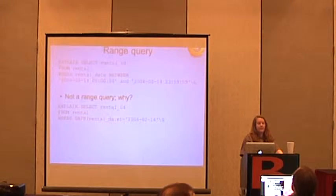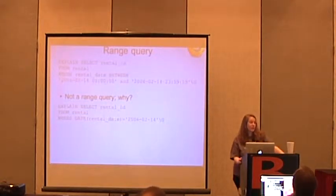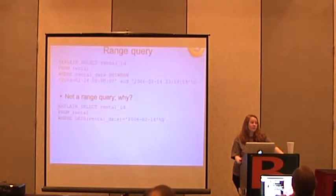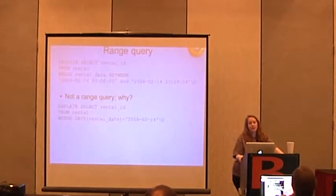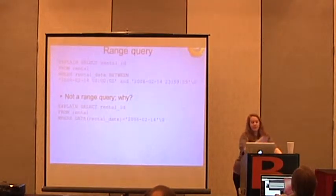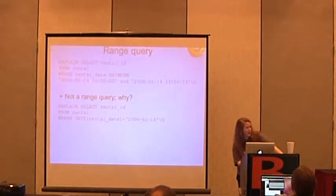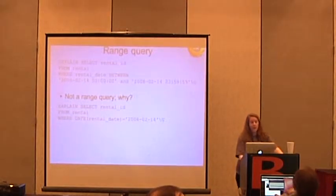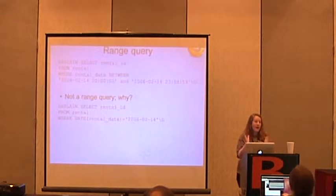MariaDB does have what are called virtual columns, which can be persistent or not. So it does have materialized views in that kind of a way — it materializes, and you can use functional indexes in MariaDB. MySQL doesn't have this yet — I don't see it on the roadmap for 5.6 — but MariaDB does have it in version 5.2, which is a 5.1-compatible MySQL.